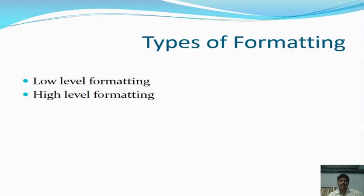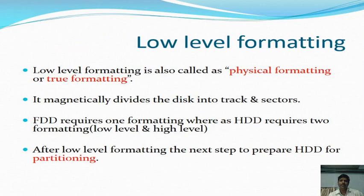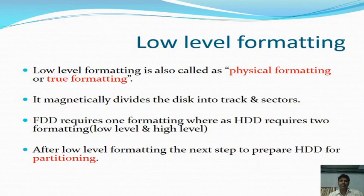There are two types of formatting. The first one is low-level formatting and the second one is high-level formatting. Low-level formatting is also called physical formatting or true formatting. Generally, a floppy disk drive requires only low-level formatting, whereas a hard disk drive requires both low-level and high-level formatting.